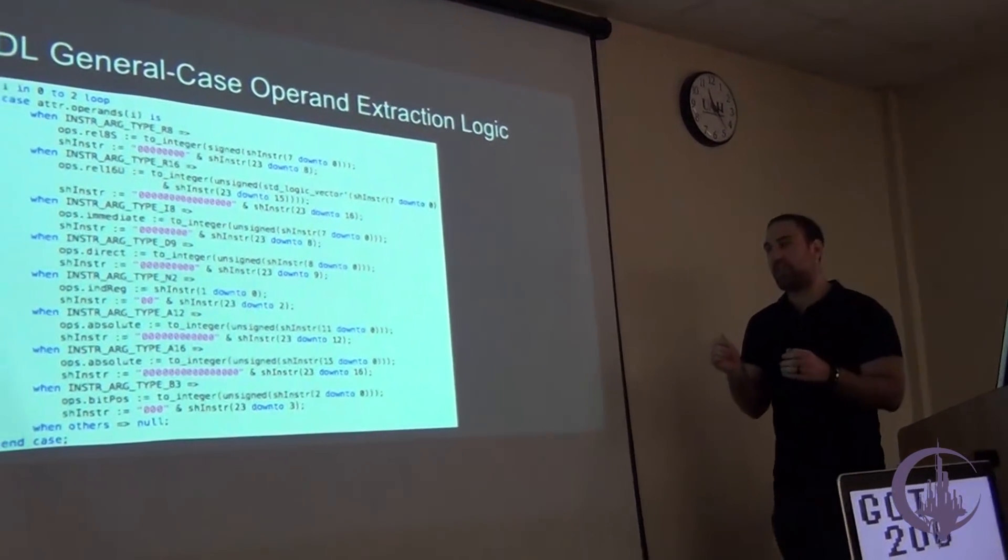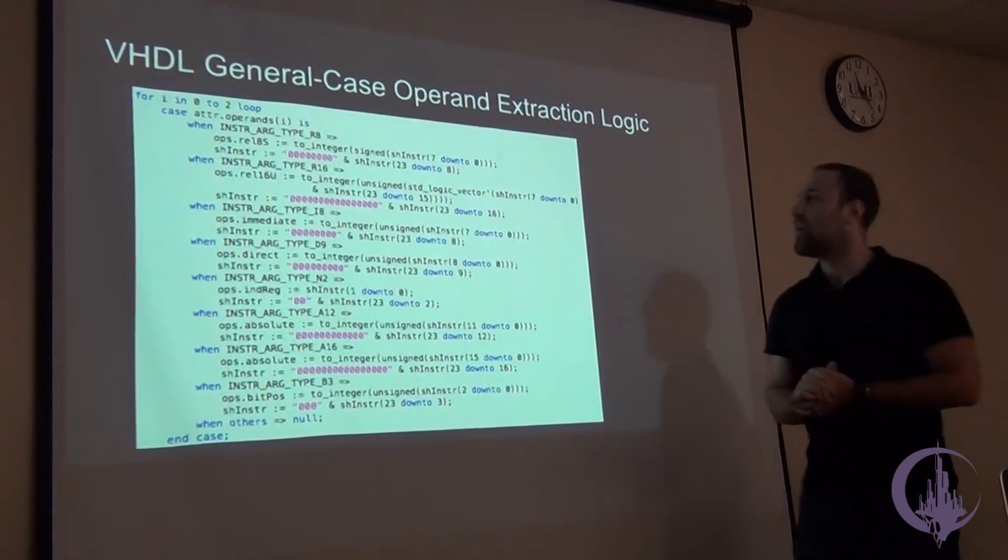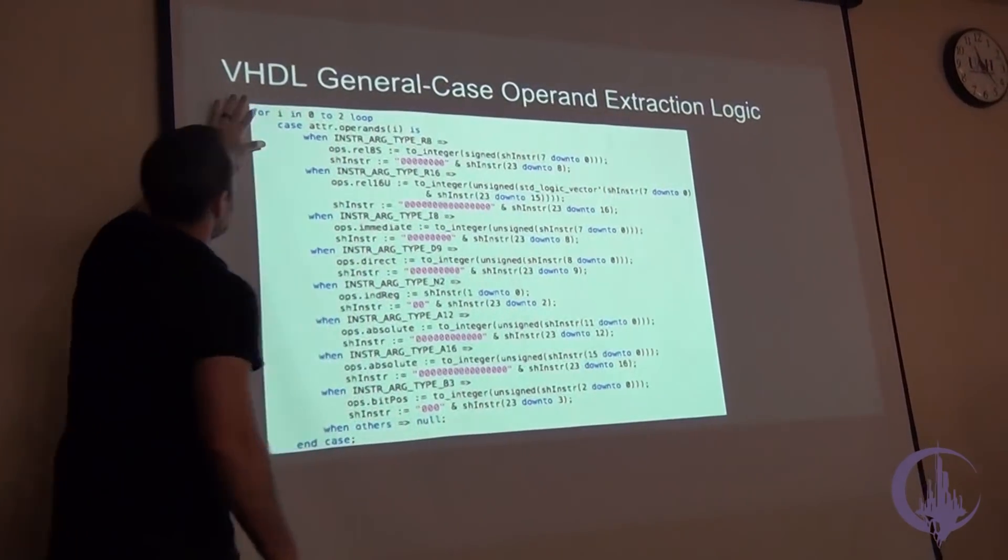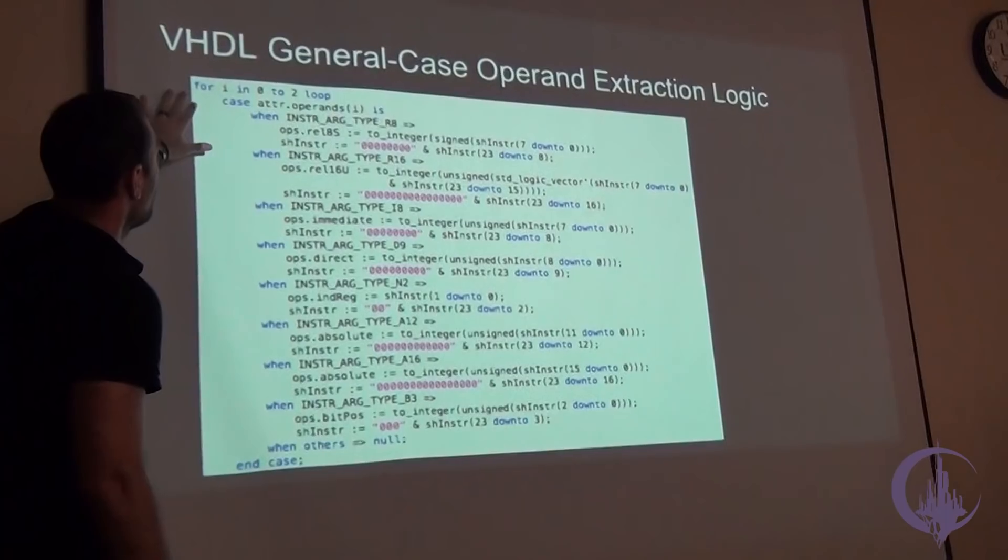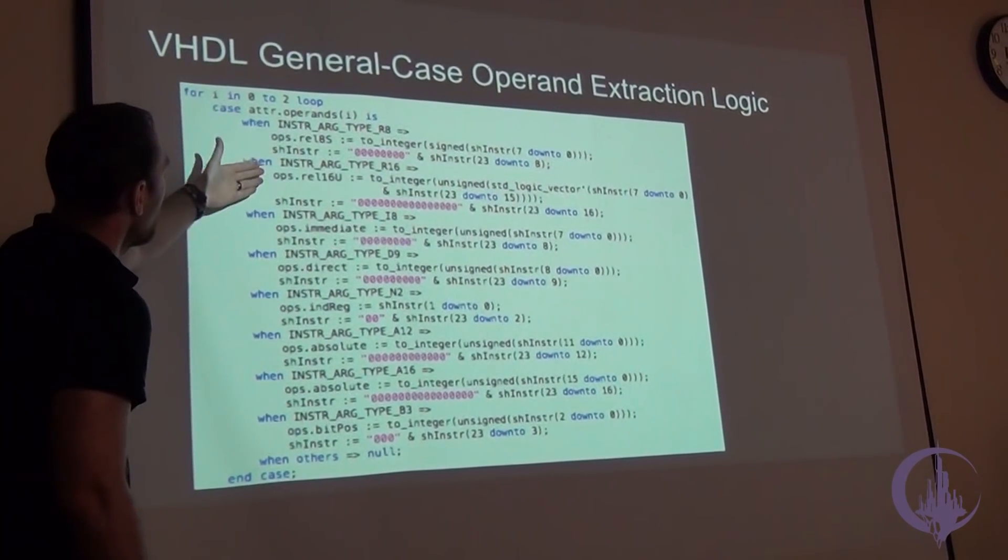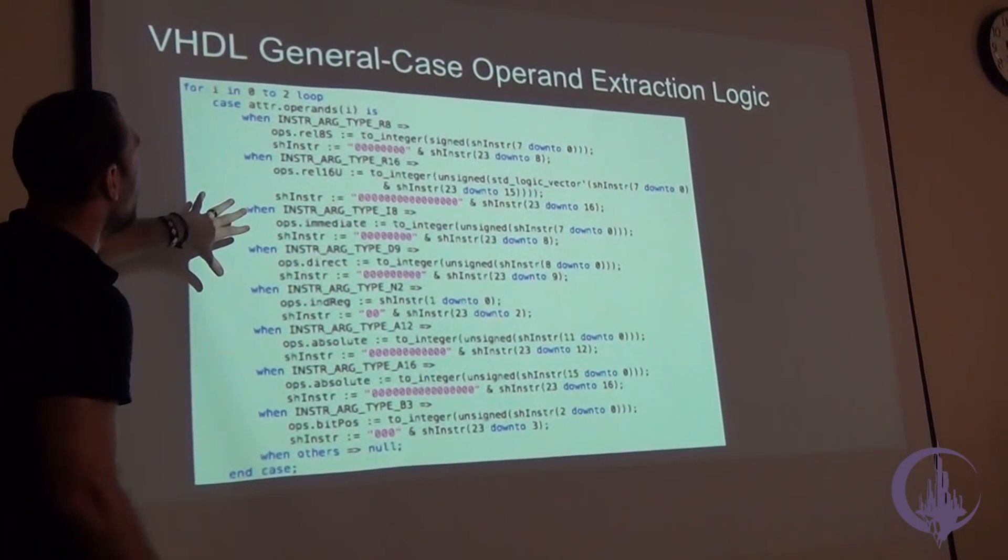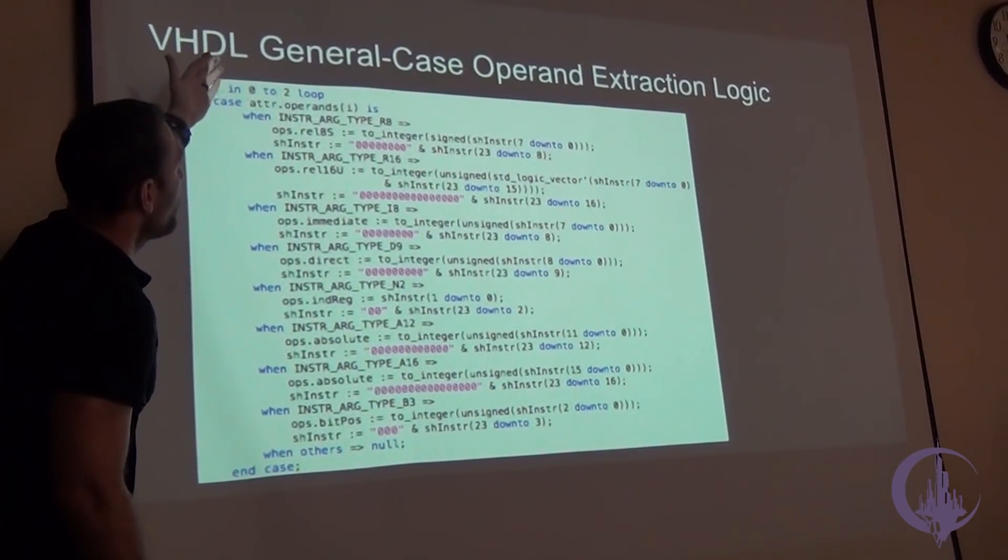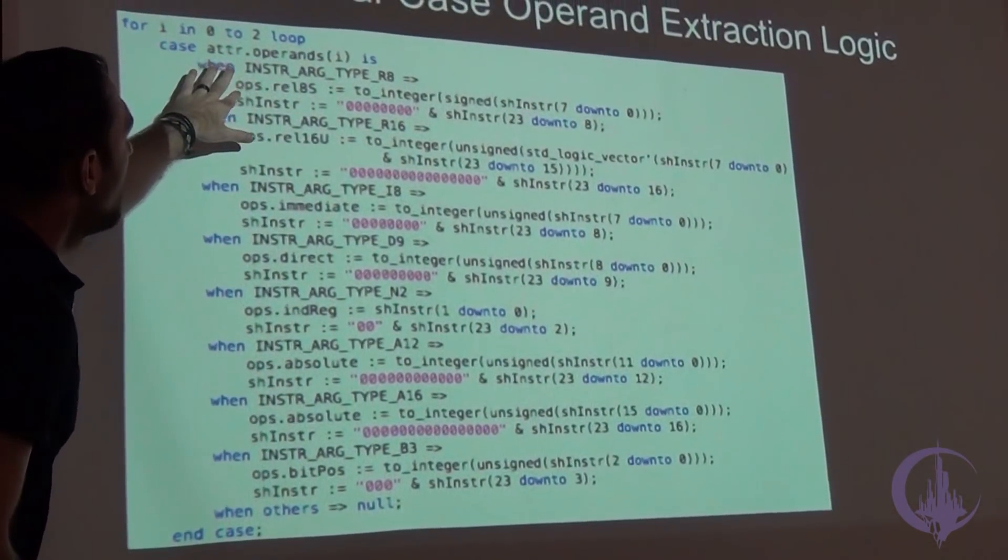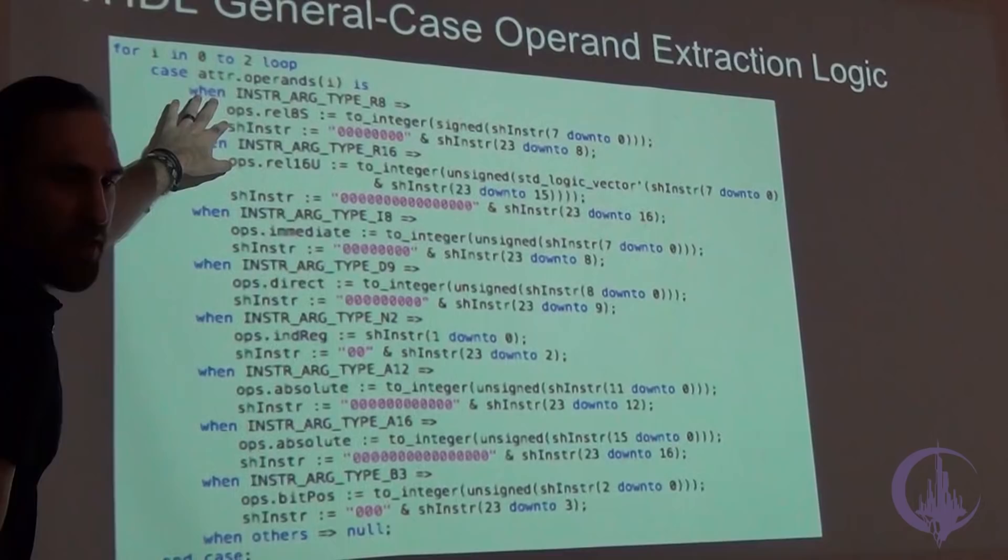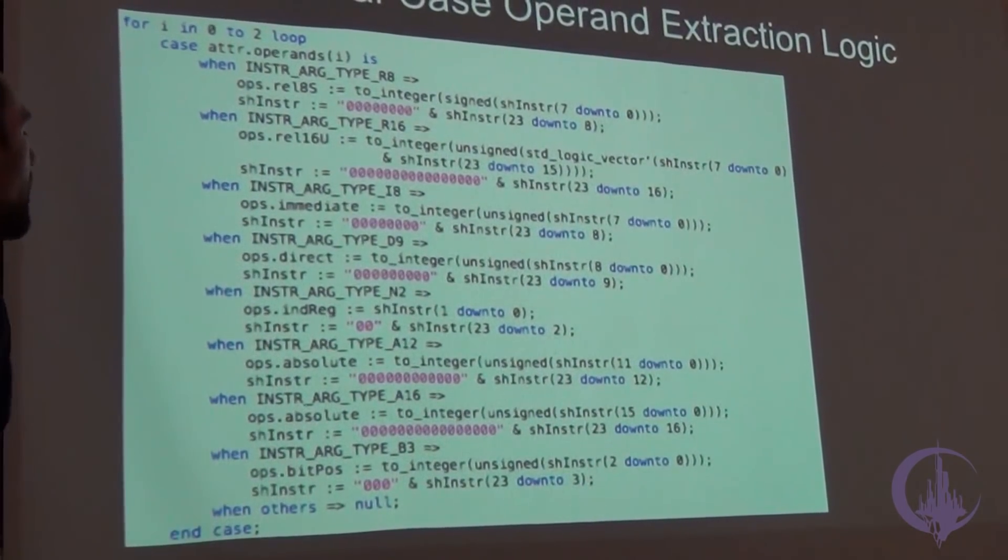This is a look at the general purpose operand extraction logic. Like I said, it's a loop of up to three different operands for the largest instruction, and it's looking at the type of the operands based on the opcode from that giant lookup table that I made, and it's saying, if this is a relative eight opcode, then it's extracting it into this ops is a record of the different operands that are extracted. So it's just extracting each operand there.